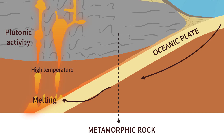The most common settings where metamorphism occurs are at a contact or local setting, where the changes to the rock are caused predominantly by heat, and in a regional scale setting, where the changes to the rock are caused by both heat and pressure. There are other, less common types of metamorphism, but we'll focus on local and regional metamorphism here.